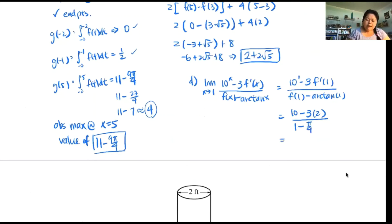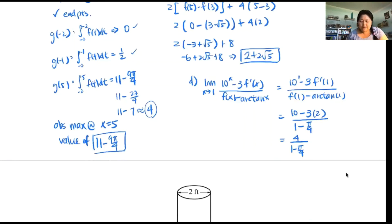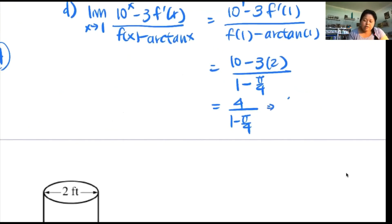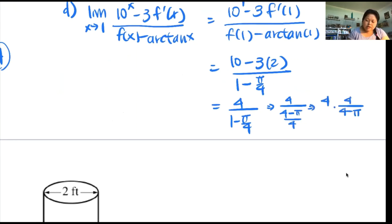We get negative 4 over 1 minus π over 4. To clean this up into one fraction, convert the denominator: 1 minus π over 4 equals (4 minus π) over 4. Then multiply by the reciprocal: negative 4 times 4 over (4 minus π), giving a final answer of negative 16 over (4 minus π). That's it for this problem.